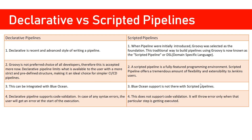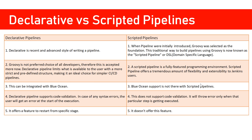Another important difference is that declarative pipelines have code validation support — if something is wrong in the pipeline, you will get an error at the start of execution. In scripted pipelines, you won't get that error until you actually reach that particular step. Also, with declarative pipelines you can restart a job from any particular stage, but scripted pipelines do not support that.